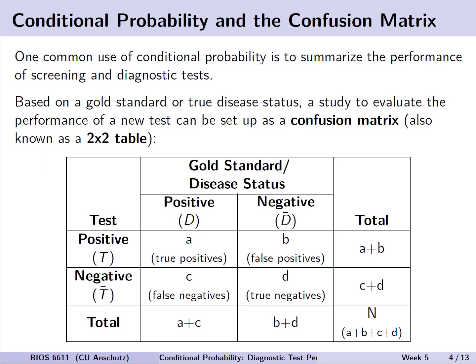One common use of conditional probability is to summarize the performance of screening and diagnostic tests. For example, we may have some gold standard test that already exists to measure disease status, or perhaps we can identify disease status, but maybe it takes time, money, effort, or is too invasive. On the alternative, we might be able to develop some new test to screen or diagnose a disease that we're hoping will do a good job of correctly predicting the disease status. We can set up the results if we design a study to do this in the form of what we call a confusion matrix or a 2 by 2 table.